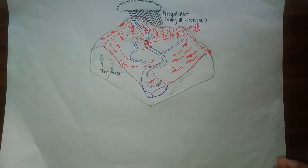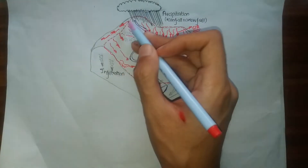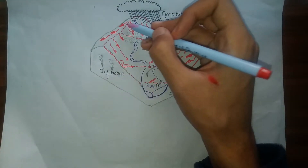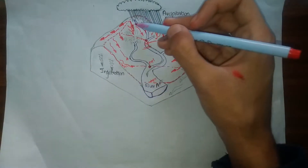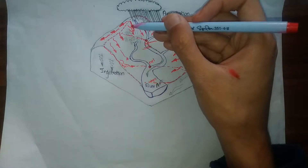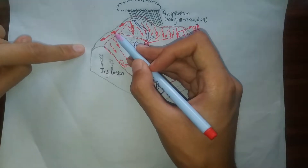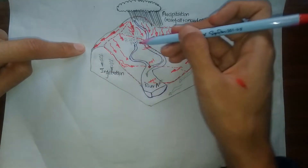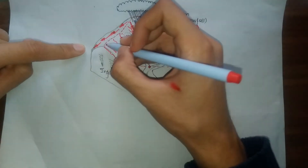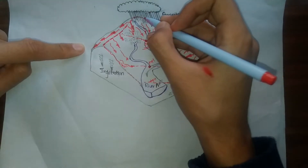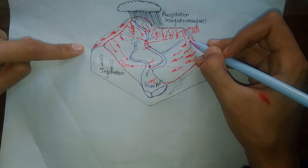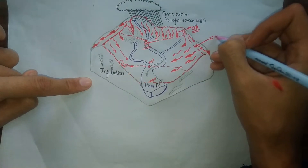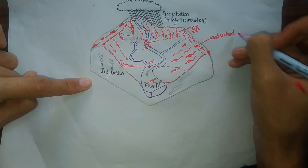Now let's talk about watershed. When water falls on the land it gets divided — some of the rainfall is flowing in this direction contributing to River A and falling within our catchment area, while some of the rainfall flows in another direction and does not contribute to River A. The specific line that separates our catchment area from other catchment areas is known as our watershed.